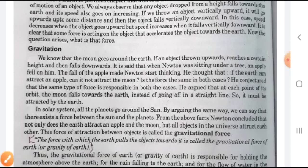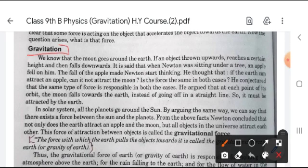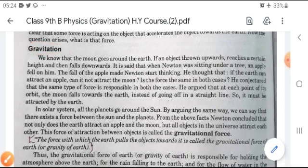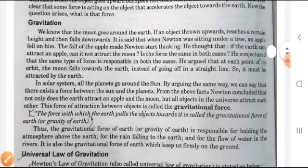Our topic is gravitation. We know that the moon goes around the earth. If an object thrown upward reaches a certain height and then falls downward, it is said that when Newton was sitting under a tree, an apple fell on him. You know this story very well. When he discovered the gravitation law, that is universal gravitation law.